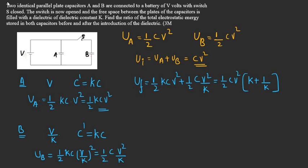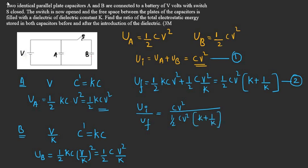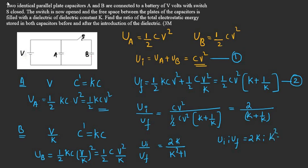The question asks for the ratio of total electrostatic energy stored before and after the introduction of the dielectric. The initial energy Ui = CV² and the final energy Uf = ½CV²(K + 1/K). Taking the ratio Ui/Uf: CV² divided by ½CV²(K + 1/K) gives 2 divided by (K + 1/K). Simplifying further, Ui/Uf = 2K / (K² + 1). So the ratio of Ui to Uf is 2K divided by K² + 1.